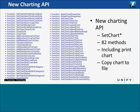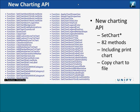Here's the list of functions of the new chart control — an impressive list of 82 methods including SetChartStar. There are things like printing a chart, copy chart to file, which allows you to save a chart in various file formats from PNG to Excel and XPS, which is kind of the Microsoft PDF competitor.